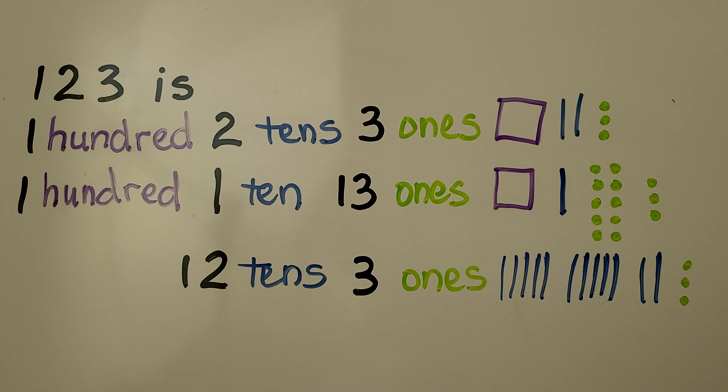123 is also 100, one ten, thirteen ones. We can turn one of the tens into ten ones.